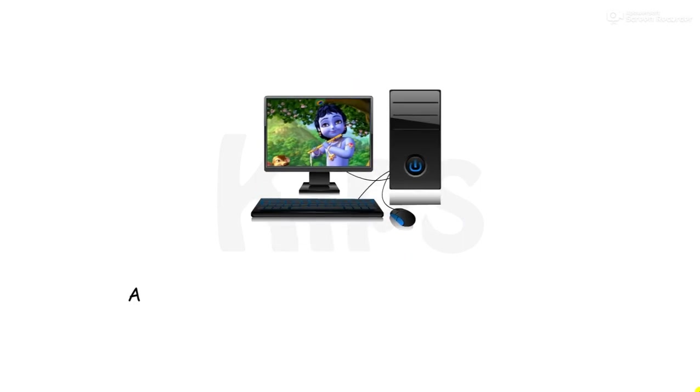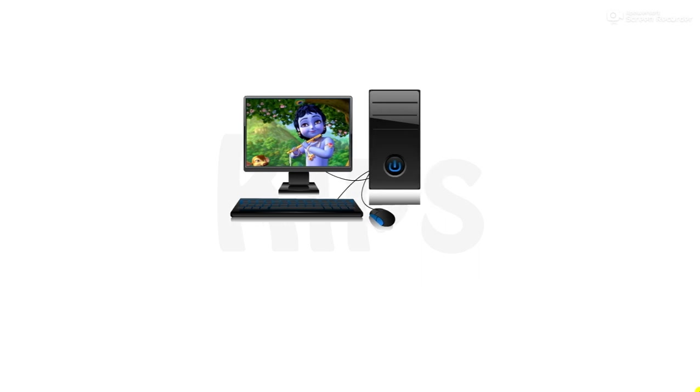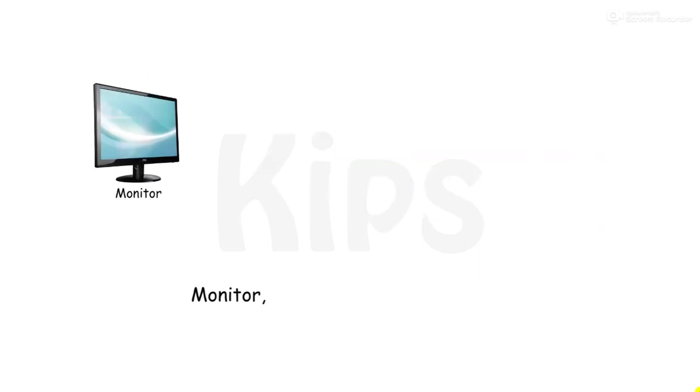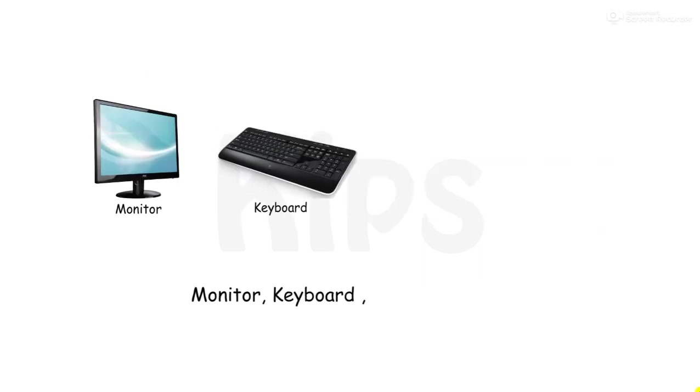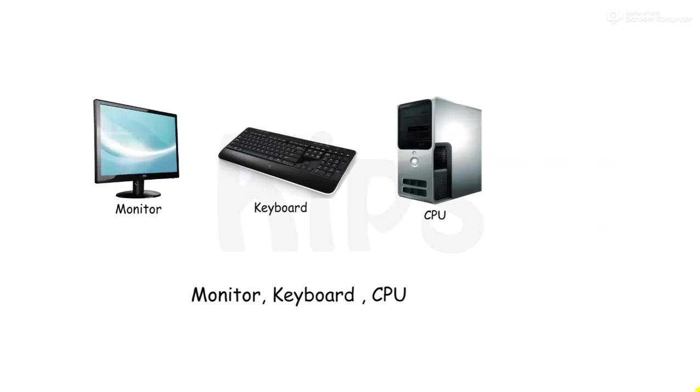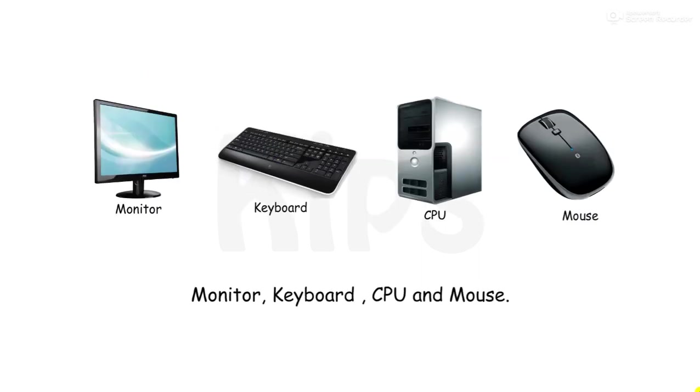A computer is a machine that has 4 main parts: Monitor, Keyboard, CPU and Mouse.